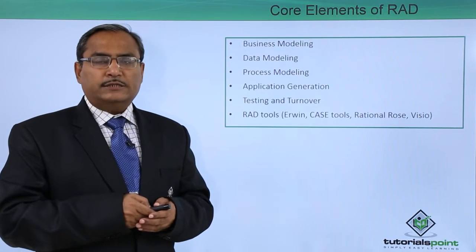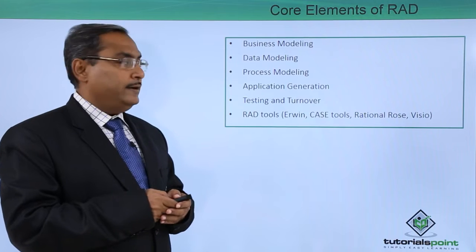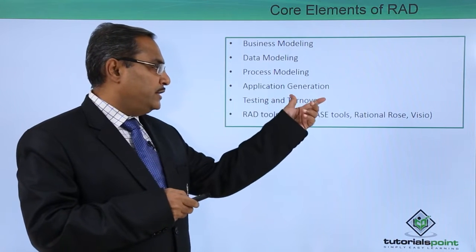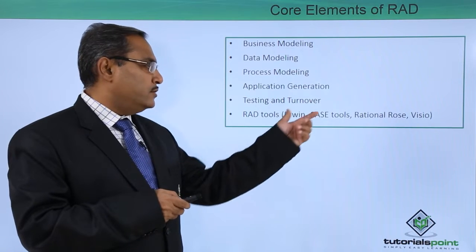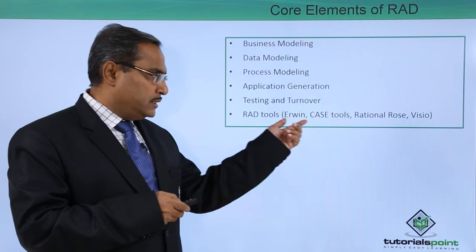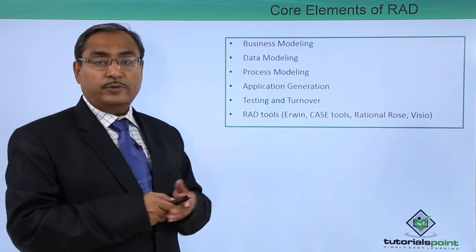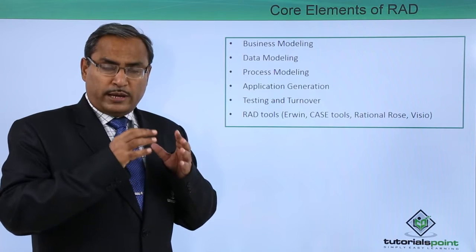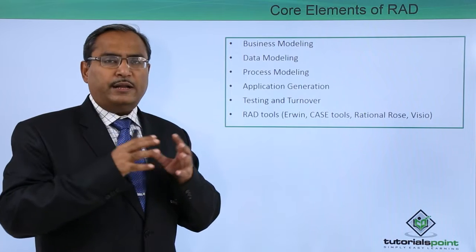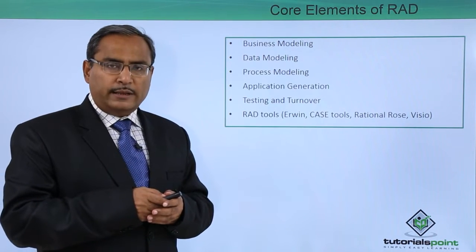The core elements of the Rapid Application Development Model include business modeling, data modeling, process modeling, application generation, testing and turnover, and multiple different RAD tools. These RAD tools are widely used today. This RAD model can only be applied whenever software can be developed based on multiple different components.